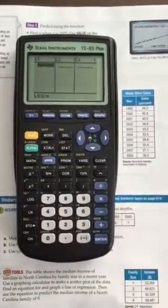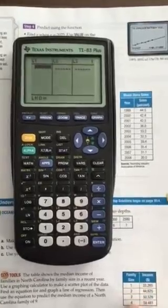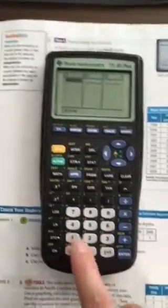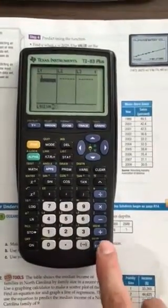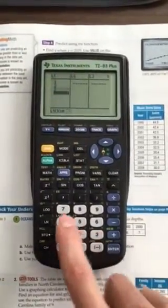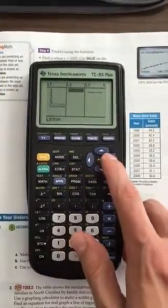Now we want to enter 1, 2, 3, 4 as our X and these values as our Y. So we're going to hit 1 enter, 2 enter, 3 enter, 4 enter, and then go over here.